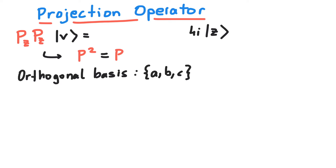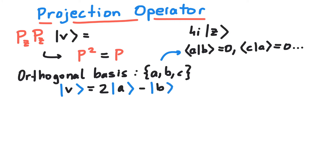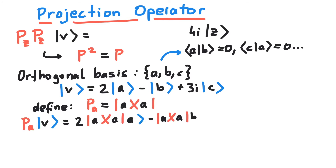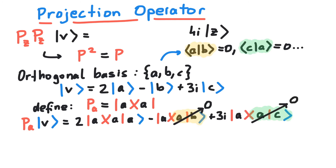Let's say we have some bases A, B, C and a vector V, which is in a superposition of those three. If you want to know how much of V is built up by A, we can define the following projection operator. And sure enough, applying P to V gives the A contribution of V.